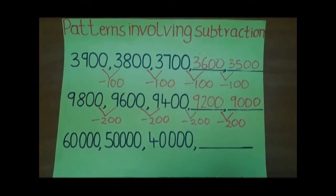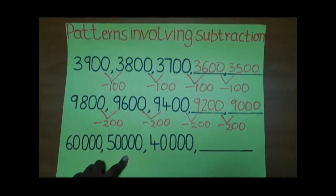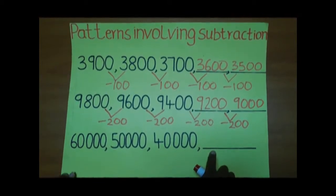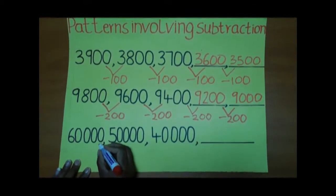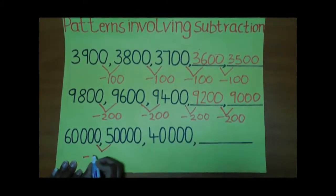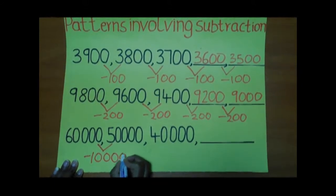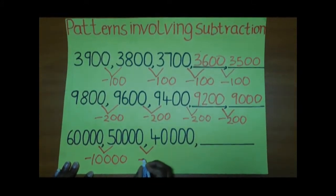In our third example, we have 60,000, 50,000, 40,000 and a dash. The difference between 60,000 and 50,000 is 10,000. The difference here is also 10,000.